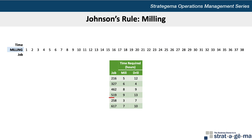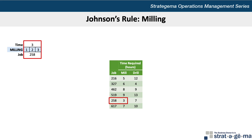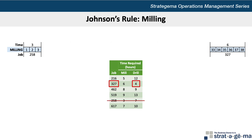With our data, job 258 requires the least amount of time in a department — in this case, three hours in the milling department. So we will sequence that job first and start at the beginning, on the left. The next shortest time is job 327 with 4 hours of drilling required. Since the smaller processing time relates to the drilling department, we will schedule that job last and work backward from the end of our 38-hour processing time, or the right side, in the milling department.